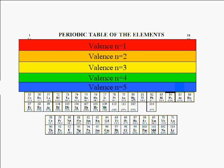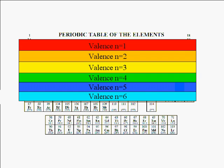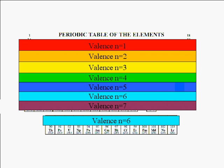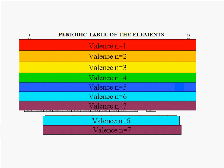For elements in row 6, the valence shell is the sixth shell. The same is true for the lanthanides. These elements actually belong to row 6. For elements in row 7, the valence shell is the seventh shell. The same is true for the actinides. These elements actually belong to row 7.